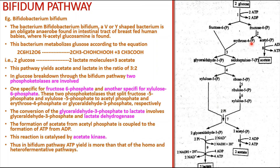In the bifidum pathway, two molecules of glucose are converted into two molecules of fructose-6-phosphate. One fructose-6-phosphate is converted into xylulose-5-phosphate, from which lactate is derived, and the other fructose-6-phosphate directly gives rise to acetate. Additionally, ribose-5-phosphate is also yielded and converted into two acetyl phosphate molecules, giving two molecules of acetate. The conversion of acetyl phosphate to acetate involves the enzyme acetate kinase, while lactate dehydrogenase is involved in the formation of lactate.